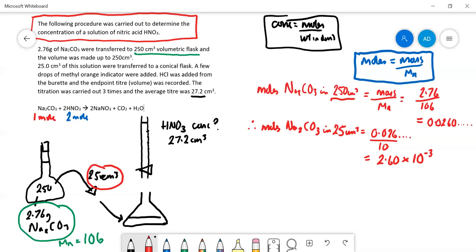We go to the equation. It's one mole of sodium carbonate to two moles of nitric acid. So moles of HNO3 equals 2 times 2.60 times 10 to the minus 3, which equals 5.21 times 10 to the minus 3 moles of nitric acid.